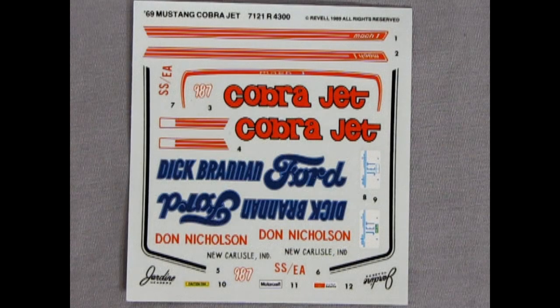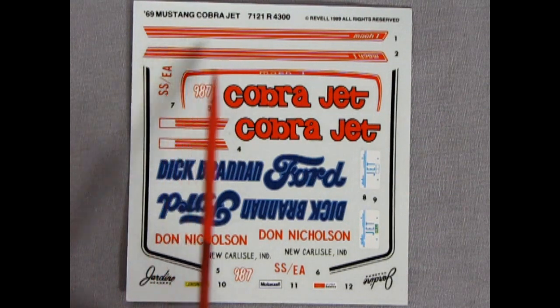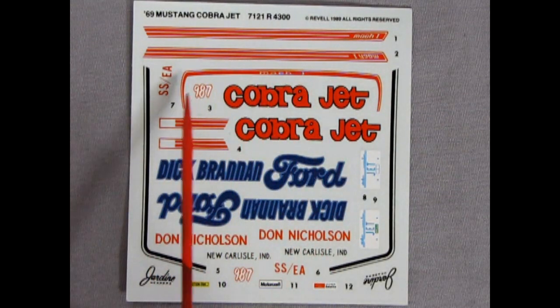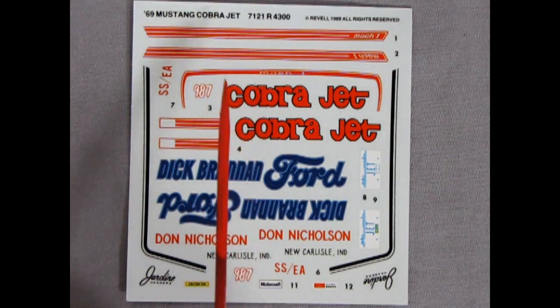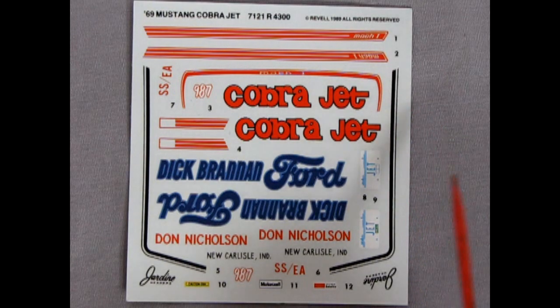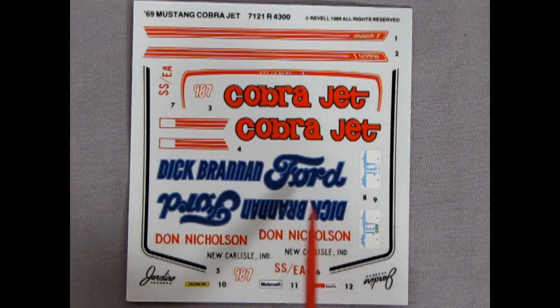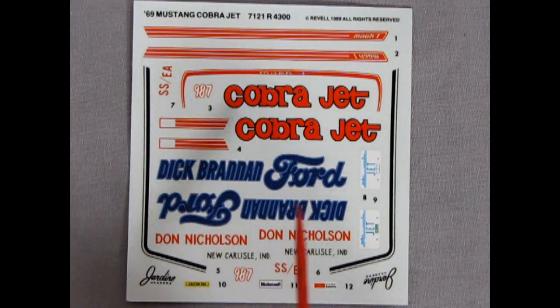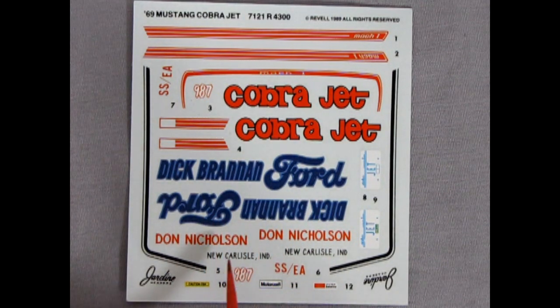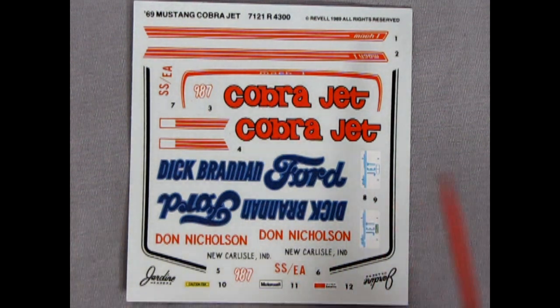Finally we get our decal sheet for our Mustang Cobra Jet which does include the red Mach 1 stripes right out of factory. The only thing is I wish it had some different colored stripes as well. But what can you do? There's the black and whites for the hood. And then we get these beautiful Cobra Jet and Dick Brennan Ford decals with of course Don Nicholson as a driver. And there's also these Jardine ones which are cool. All the little race numbers and everything.